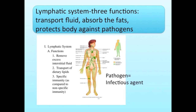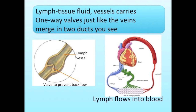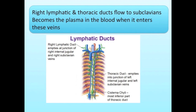The lymphatic system has three functions: transport fluid, absorb fat, and protect the body against pathogens. Lymph, tissue fluid, and vessels carry fluid using one-way valves. Just like veins, lymphatic vessels merge into ducts — the right lymphatic and thoracic ducts — which flow into the subclavian veins and become plasma.